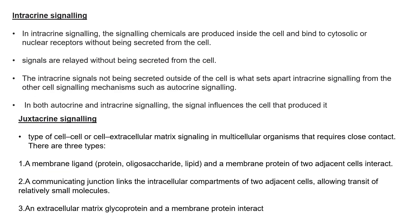Intercrine signaling involves signaling chemicals produced inside the cell that bind to cytosolic or nuclear receptors without being secreted from the cell. These signals are relayed entirely within the cell. What sets intercrine signaling apart from other mechanisms such as autocrine signaling is that the signal is not secreted outside the cell. However, in both autocrine and intercrine signaling, the signal influences the cell that produced it.